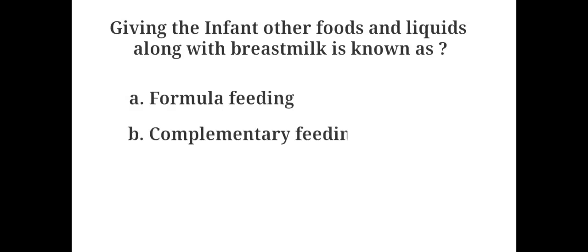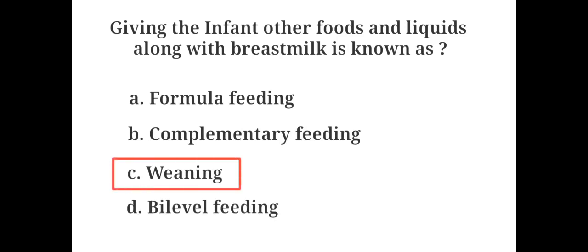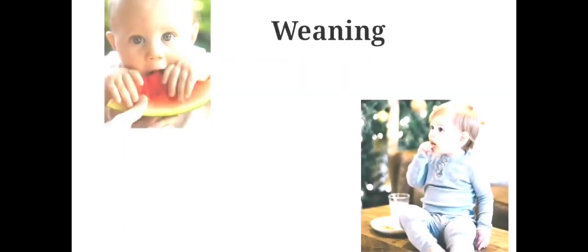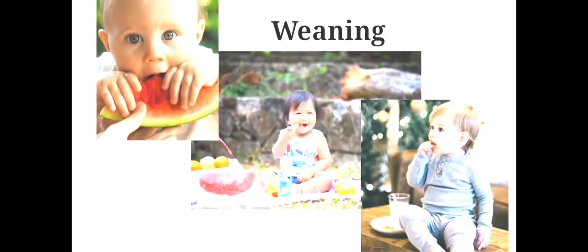Giving the infant other foods and liquids along with breast milk is known as: A. Formula feeding, B. Complementary feeding, C. Weaning, D. Bi-level feeding. The answer is C. Weaning. Weaning is a process by which a baby slowly gets used to adult foods and relies less and less on breast milk.